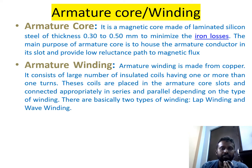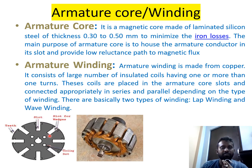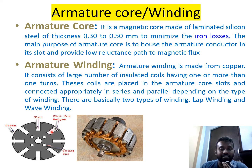The armature core is a magnetic core of laminated silicon steel of thickness 0.3 to 0.5 mm, laminated to minimize iron losses. Its main purpose is to place the armature winding and provide a low-reluctance path to the magnetic flux. The armature winding is made of copper with a large number of insulated coils connected in lap winding or wave winding. The armature core has wedge-shaped slots with cooling ducts to prevent wires from slipping due to centrifugal force and to reduce heat from rotation.